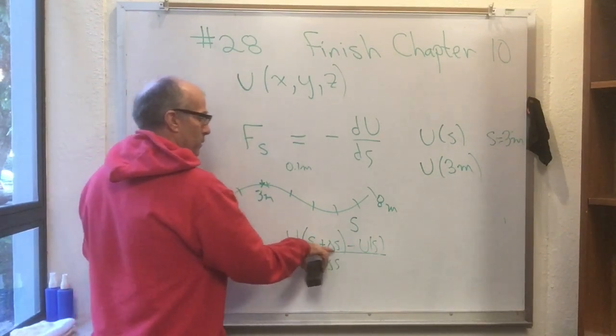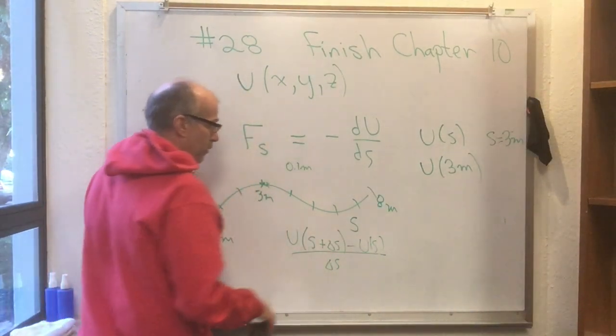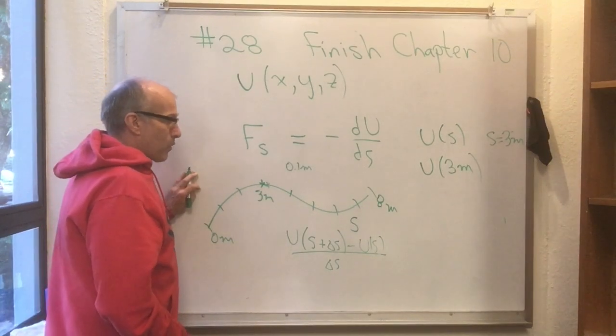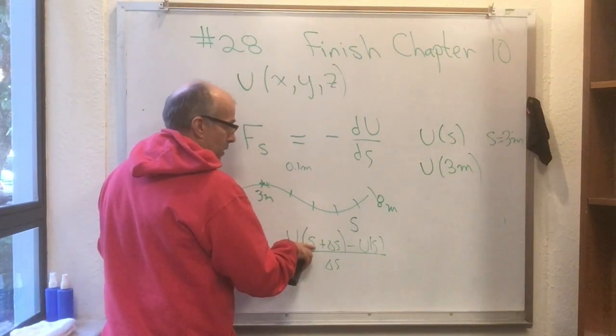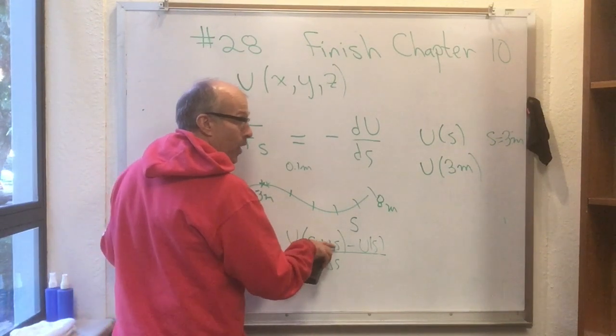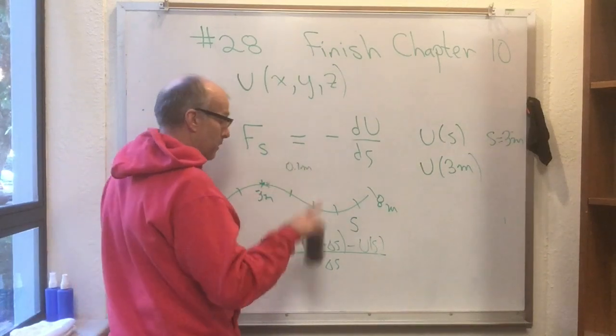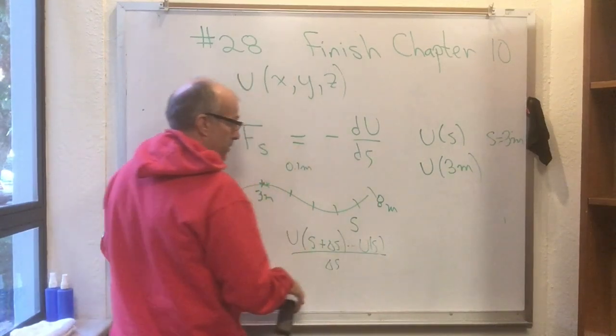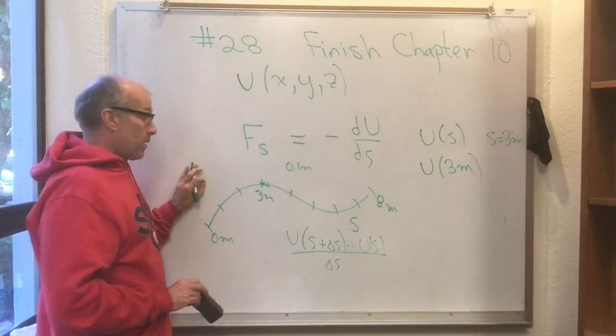So now you take U at 3.1 meters and you subtract off U at 3 meters and then divide by 0.1 meters. And if you do that with a really small amount, like what's U at 3.01 meters? Or what's U at 3 meters plus just 1 millimeter? What's U at 3.001 meters minus U at 3 meters? Divide that by 0.001 meters.